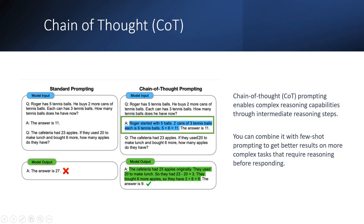So I go with chain-of-thought prompting, which is a little more elaborate with more reasoning. I provide the answer as: 'Roger started with 5 balls. 2 cans of 3 tennis balls each is 6 tennis balls. 5 plus 6 is 11. The answer is 11.' I am going more elaborative. Now when I throw the cafeteria question with chain-of-thought prompting, I get the right result. Chain-of-thought prompting enables complex reasoning capabilities through intermediate reasoning steps — I provide step-by-step breakdowns, and that helps.